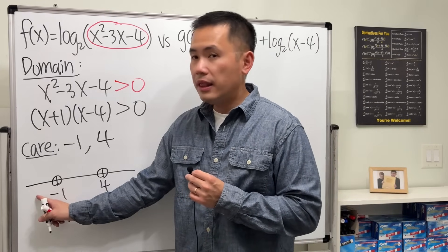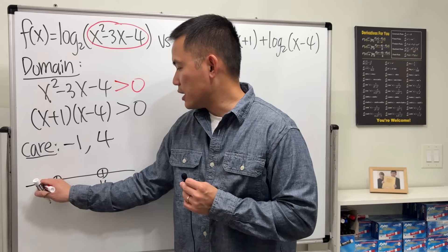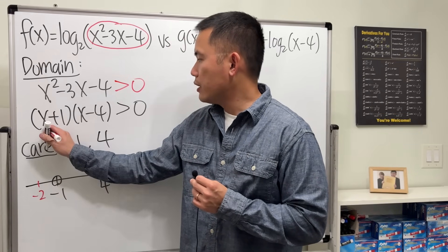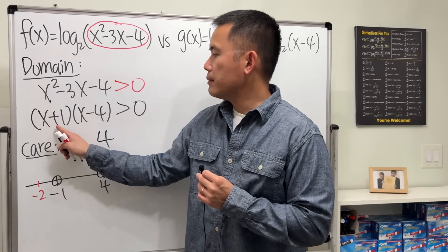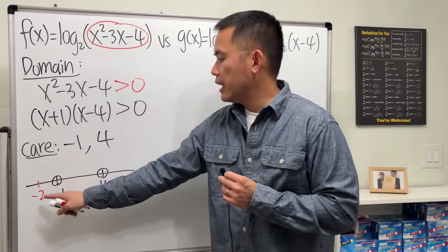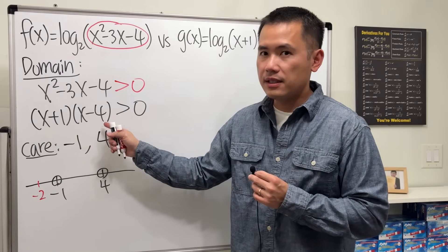Then we are going to pick a number less than negative 1, such as negative 2. Plug into here, negative 1 right here, and then plug in negative 2 in here, that would be negative 6.